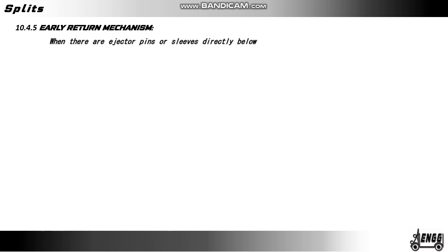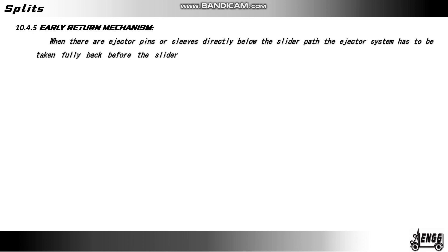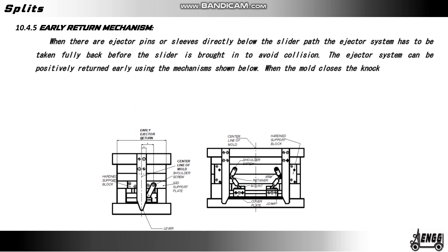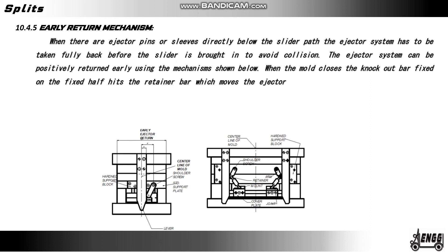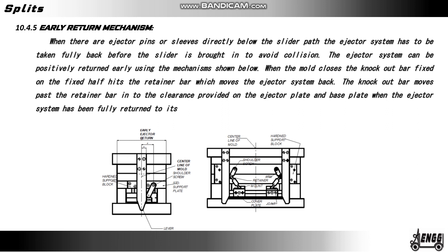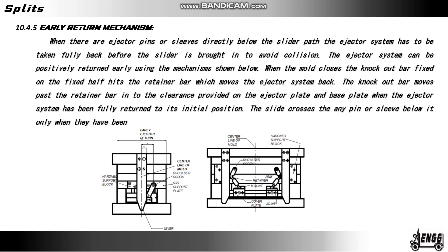Early return mechanism: when there are ejector pins or sleeves directly below the slider path, the ejector system has to be fully retracted before the slide is brought in, to avoid collision. The ejector system can be positively returned early using the mechanism shown below. When the mold closes, the knockout bar fixed on the fixed half hits the retainer bar, which moves the ejector system back. The knockout bar moves past the retainer bar into the clearance provided on the ejector plate and base plate. When the ejector system has been fully returned to its initial position, the slide crosses over any pins or sleeves below it only after they have been moved out of the collision path.